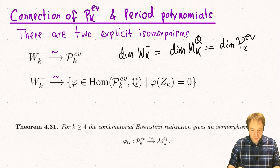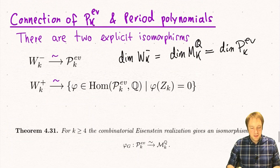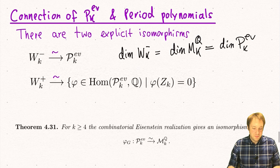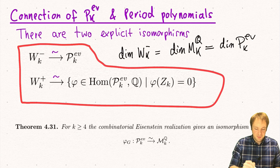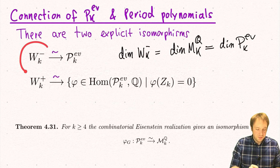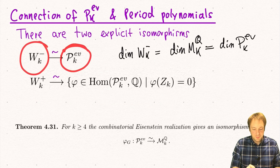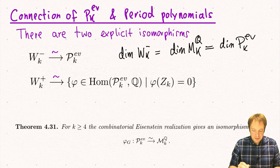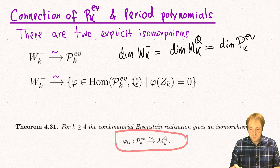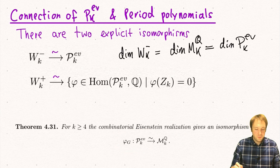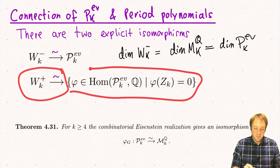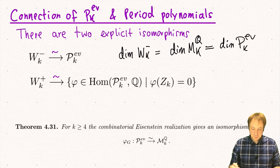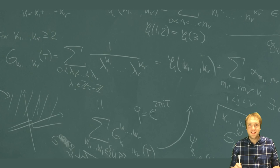This we will do next time. Then we will also prove both of these theorems. Today was just an introduction to period polynomials and the connection to the formal double zeta space. The picture is quite nice: the even part gives an isomorphism to the subspace of dk, we know this subspace is isomorphic to the space of modular forms, and also the odd part gives us some realizations. See you next time.